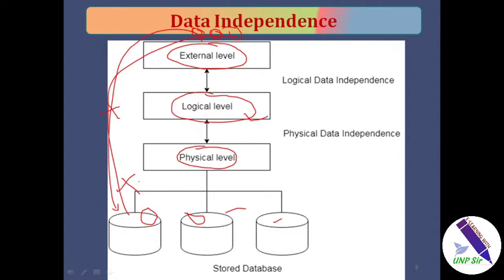There are two types of data independence: physical data independence and logical data independence. Physical data independence is in between the physical level and logical level — it separates the physical and logical/conceptual levels. Logical data independence is in between the external and logical level — it separates the external level and logical level.